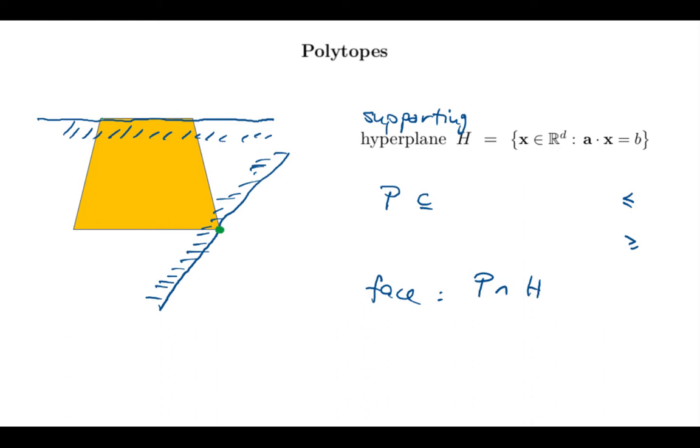And the intersection of the hyperplane with the trapezoid is this line segment over here. So this is another face. We will also think of the whole polytope, in this case the trapezoid, as a face. You can think of this as sort of the intersection of the polytope with a degenerate hyperplane. And I will most often also think of the empty set as a face. That is, I could take a supporting hyperplane that does not touch my polytope, and then the intersection will be empty.